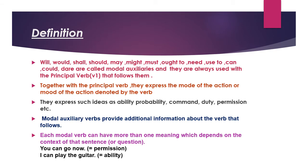Modal auxiliary verbs also work as helping verbs, but they are a different kind. They are always followed by the principal verb in its first form — it doesn't take any 's' or 'es', any 'ed', any second or third form. They are special because together with the principal verb they express the mode or mood of the action. These modals help the verb in expressing certain special modes like ability, probability, command, duty, permission, etc.